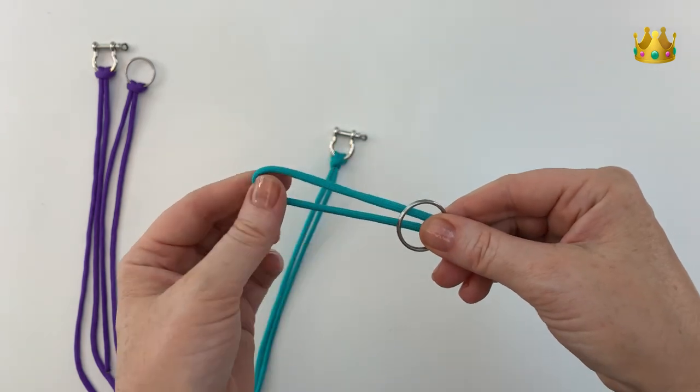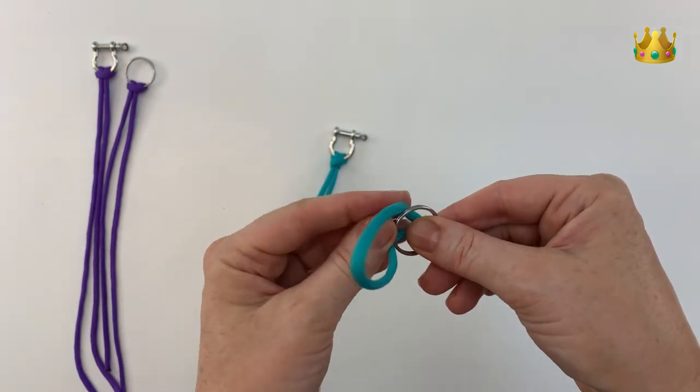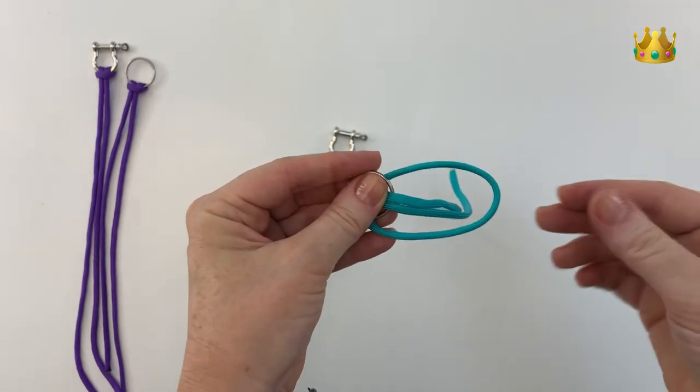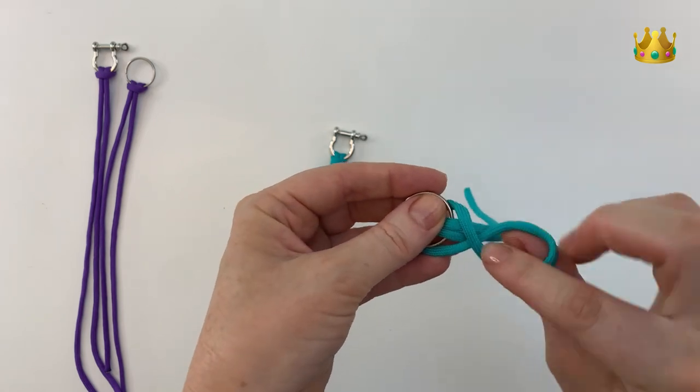Now we want a little bit of length on this loop so that we can bend it backwards over the key ring. Now once it's over this side we place one twist in the loop.